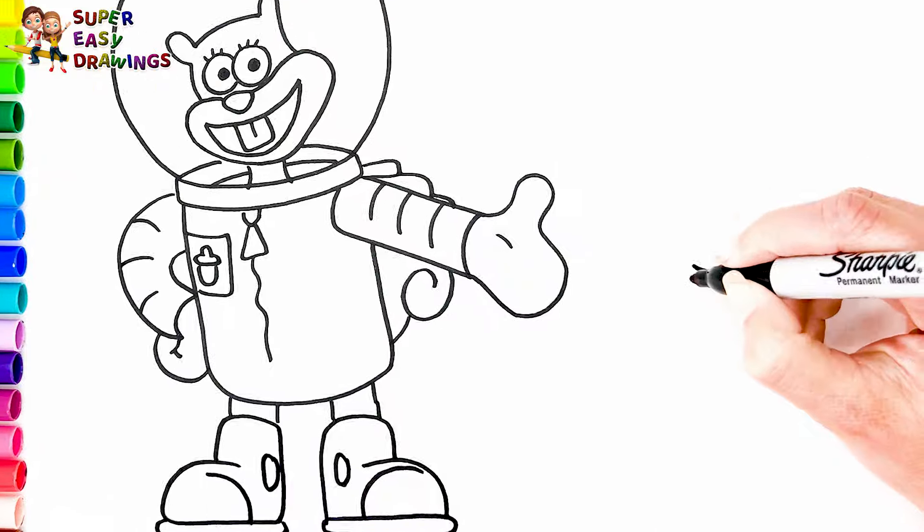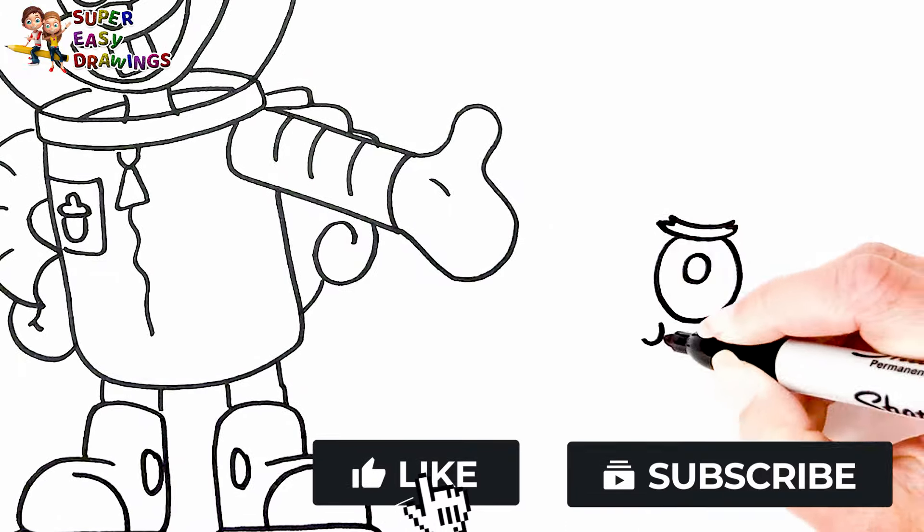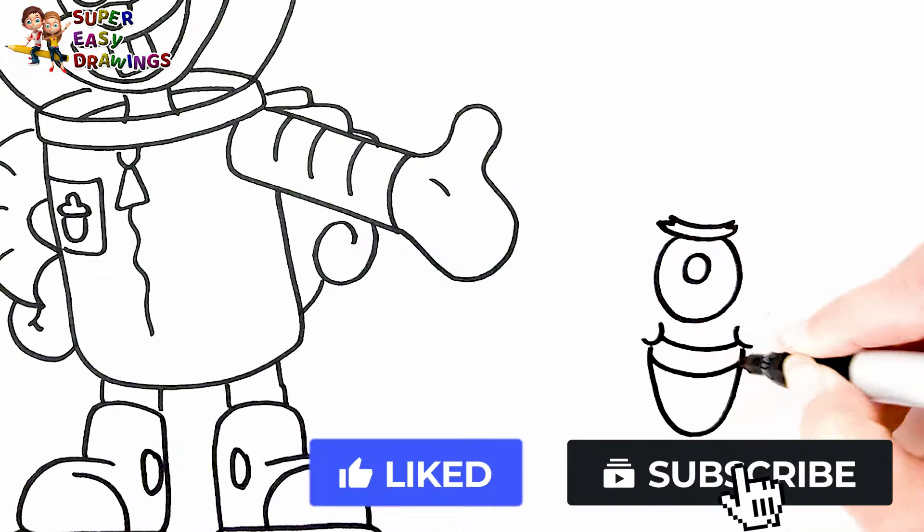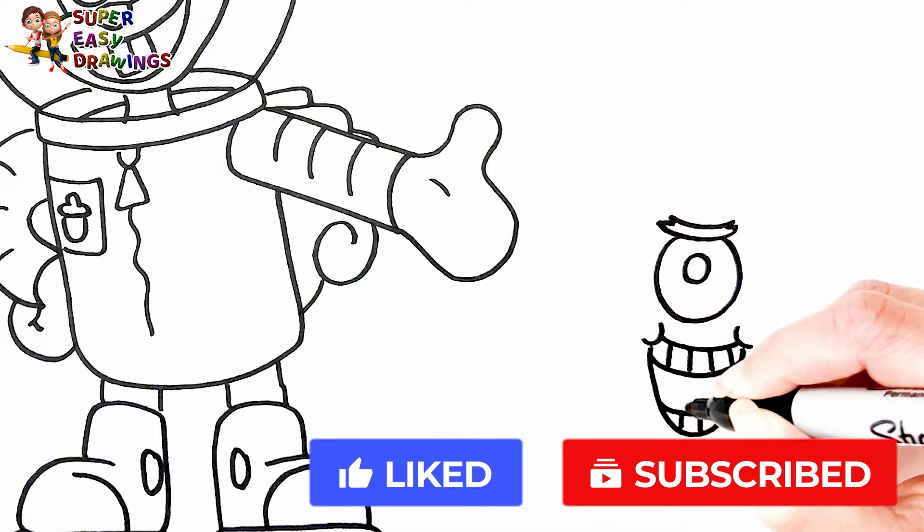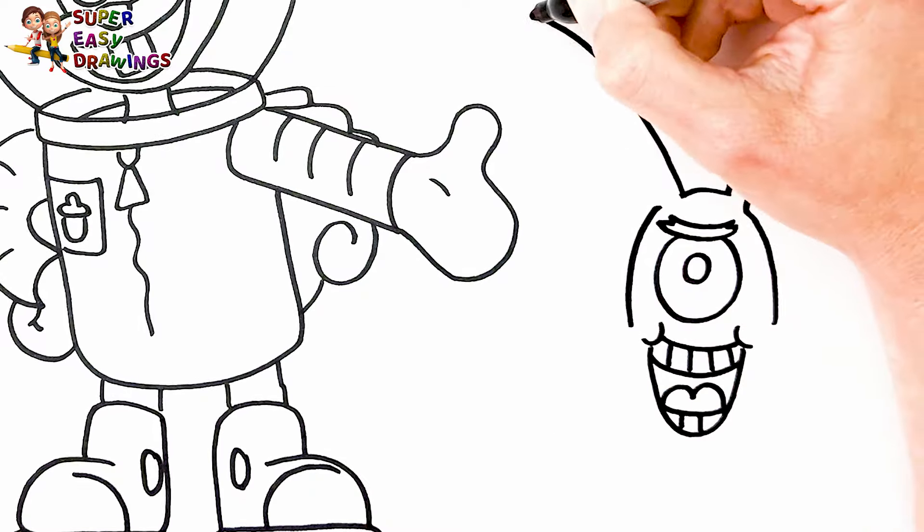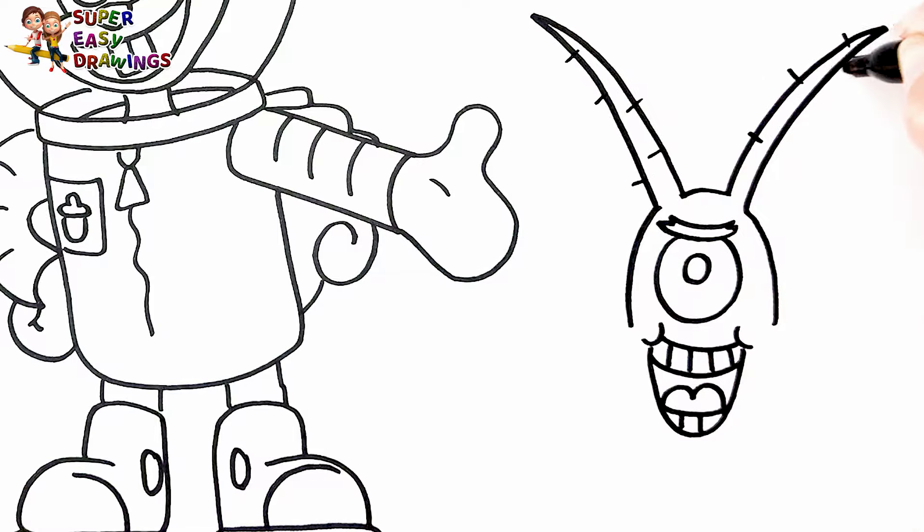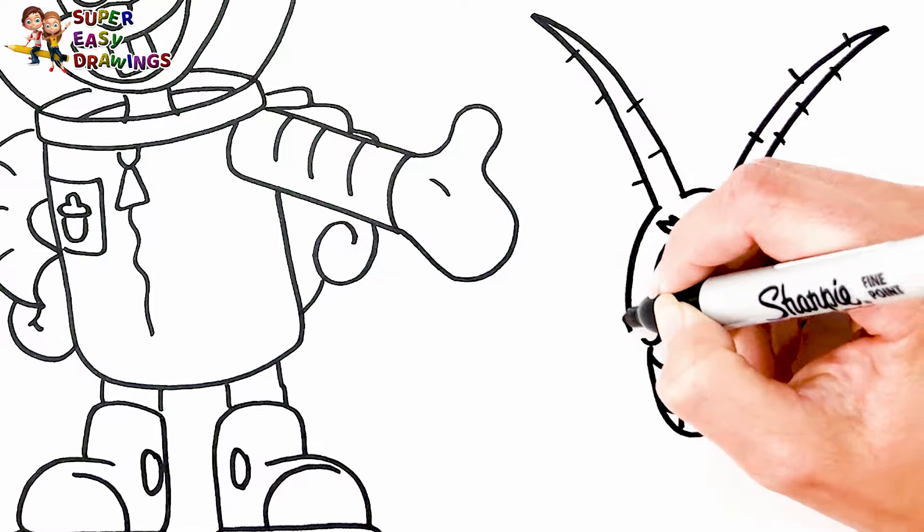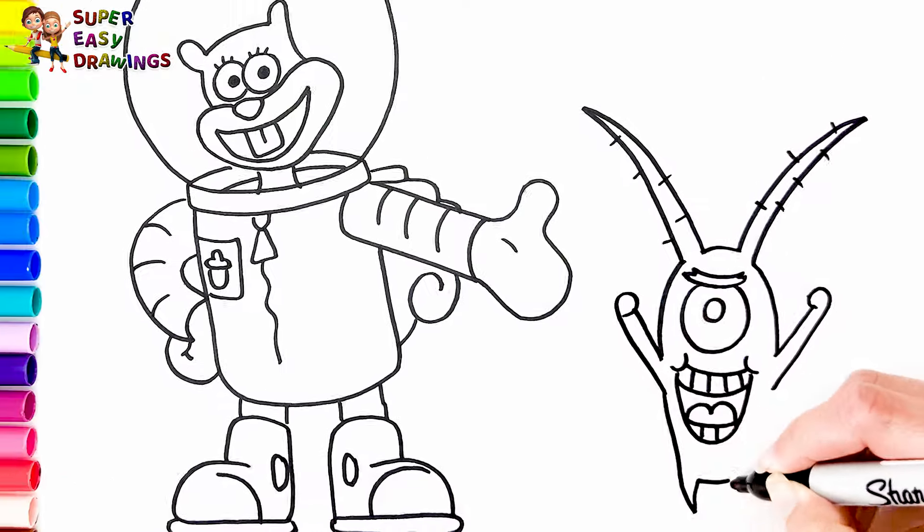The next character is going to be Plankton. I start with his eye. Then I draw his mouth like this. I continue with the shape of his head and his body. He is holding his arms like this. Bravo!